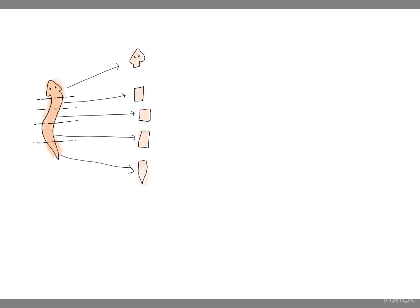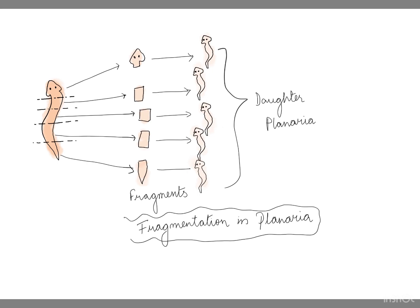In organisms like Hydra, flatworms, and Planaria, the body breaks into many pieces or fragments, and each fragment develops into a complete individual. This process is called fragmentation, which is another form of asexual reproduction.